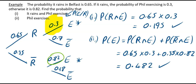Down here circled in green: it has not rained and then he has exercised, so this is the probability that he exercises given that it has not rained. So depending on whether it is raining or not, Phil is more or less likely to exercise.